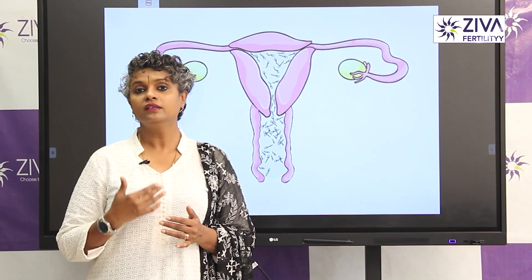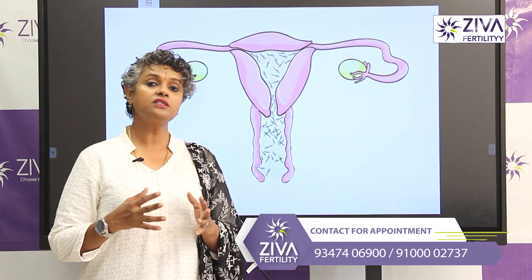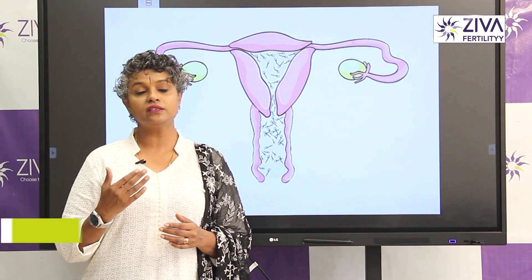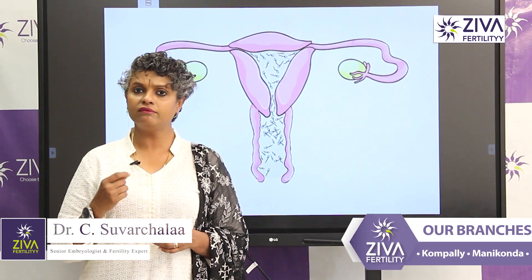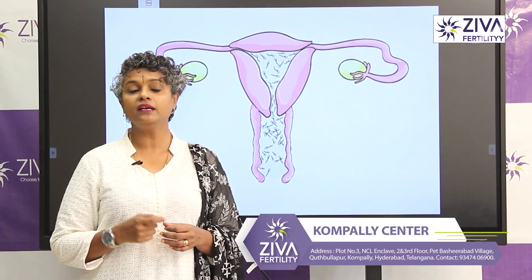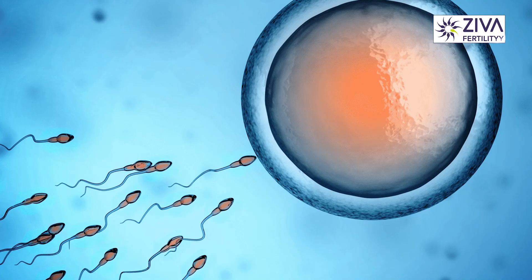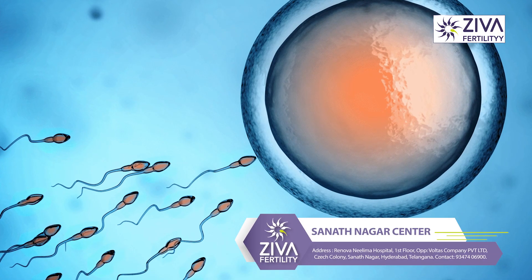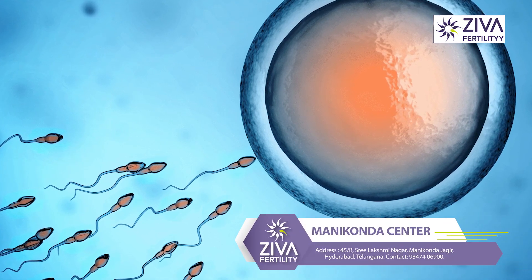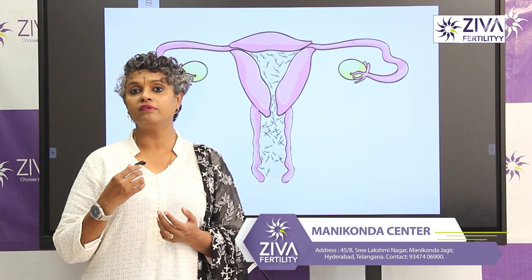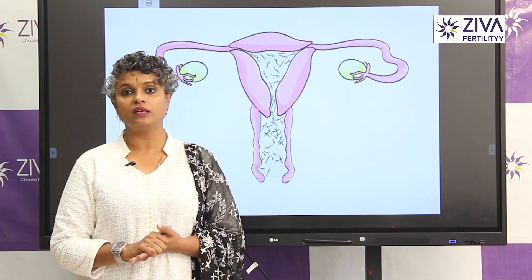The more the motility, the better the chance of the sperm reaching the egg. Not just reaching the egg — fertilization capacity also lies with the motile sperm. Once a progressively motile sperm reaches the egg, only that motile sperm can penetrate the egg. The egg is a stationary cell but the sperm is moving, so only a sperm with motility can penetrate the shell of the egg.